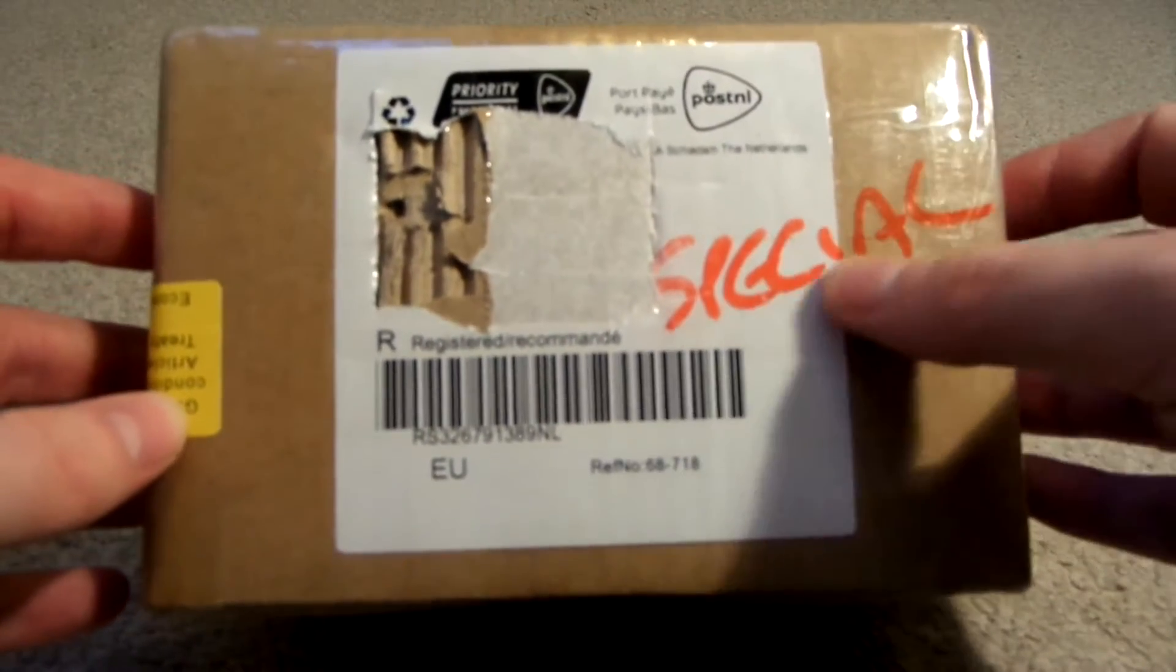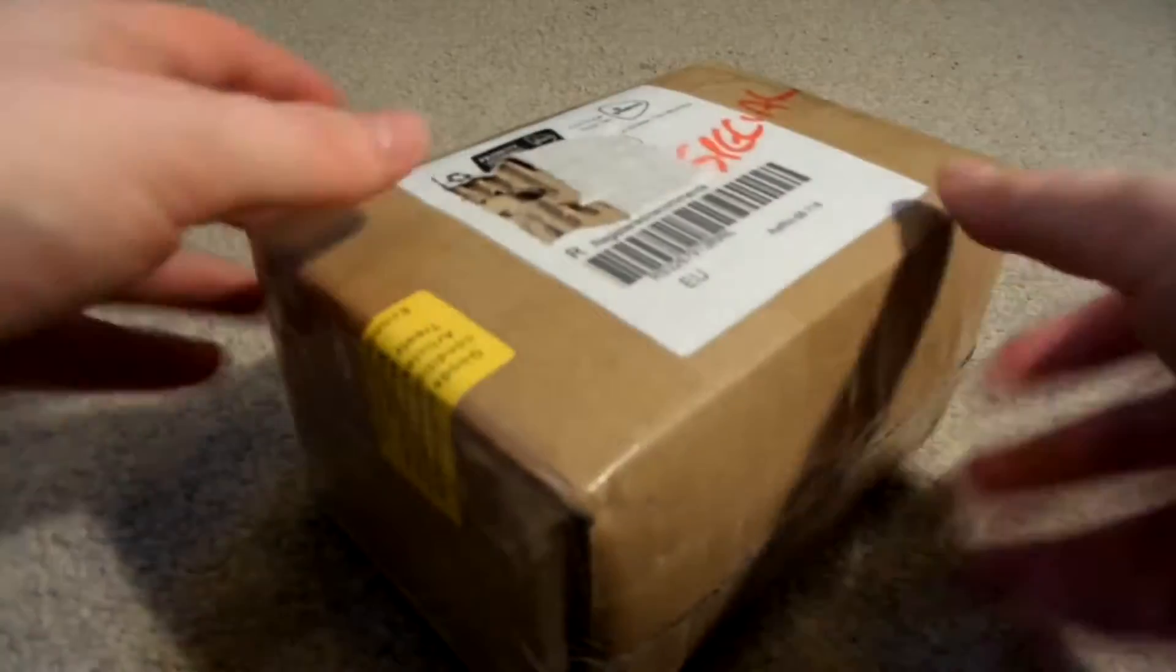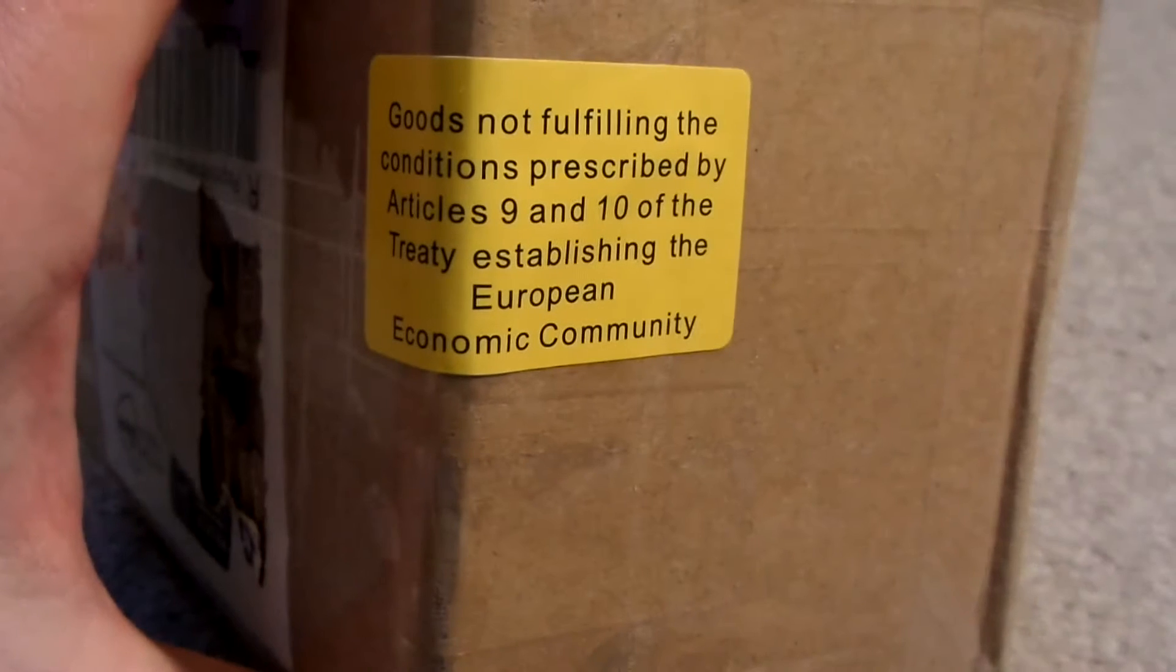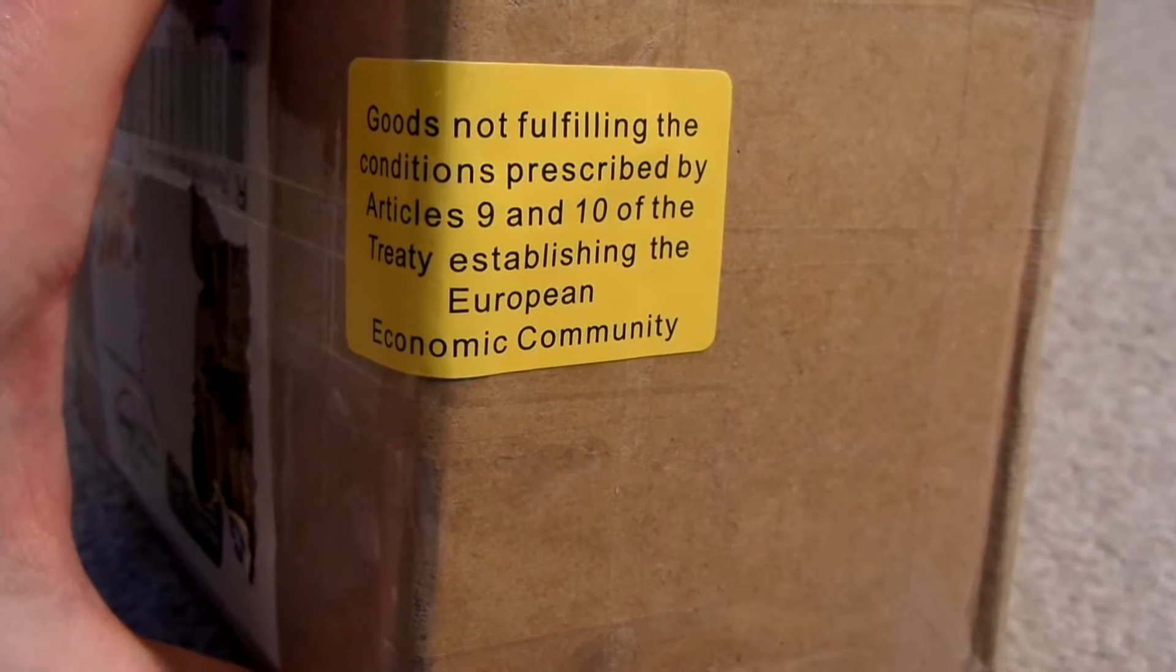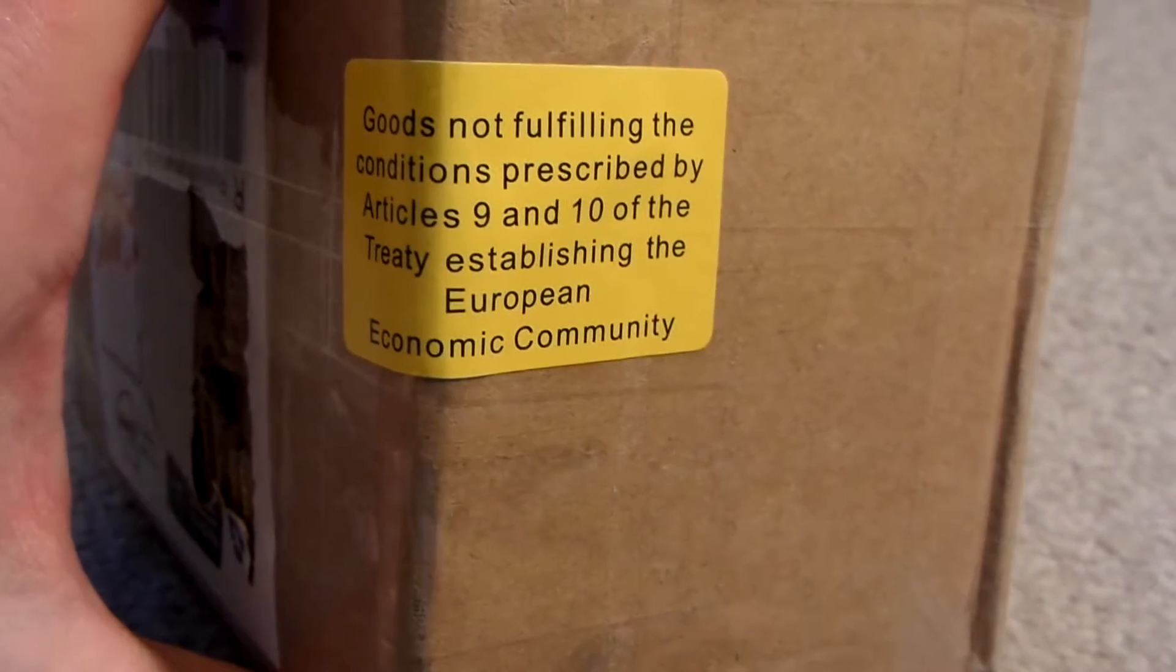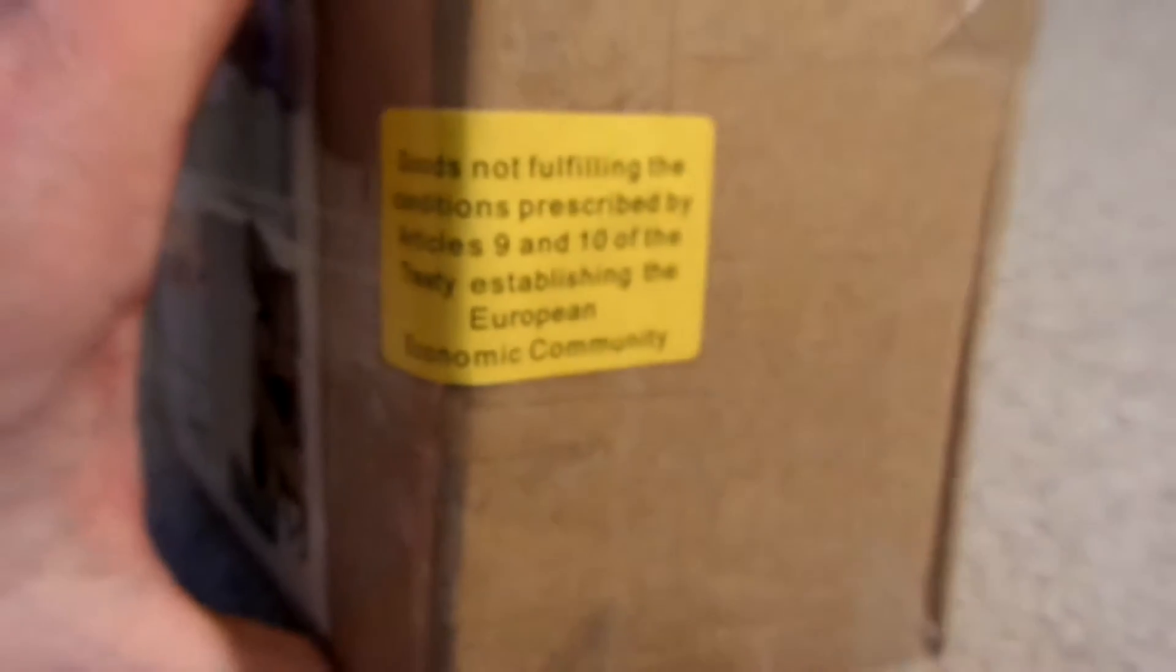So, I've got this package today. On it it says special, not sure why, and on the corner it says Goods not fulfilling the conditions prescribed by Articles 9 and 10 of the Treaty of Establishing the European Economic Community. I've got absolutely no idea what that means, I'll have to Google it.